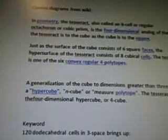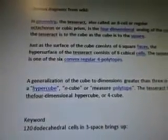Keyword is Tesseract. Quotes and diagrams from Wiki. In geometry, the Tesseract, also called an eight-cell or regular octochoron or cubic prism, is the four-dimensional analog of the cube. The Tesseract is to the cube as the cube is to the square. Just as the surface of the cube consists of six square faces, the hypersurface of the Tesseract consists of eight cubical cells. The Tesseract is one of the six convex regular four polytopes.